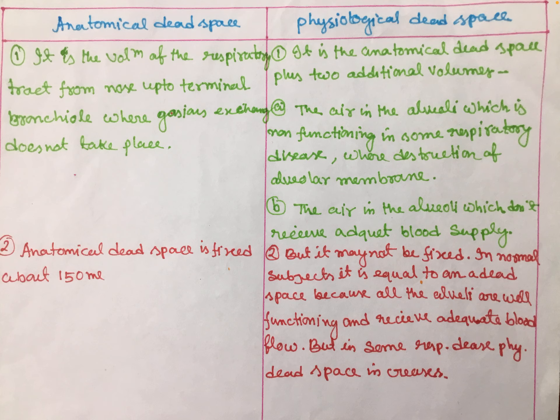Anatomical dead space is fixed at about 150 ml, but physiological dead space may not be fixed. In normal subjects, it is equal to anatomical dead space because all alveoli are functioning and receive an adequate amount of blood. But in some diseases, the physiological dead space may be increased.